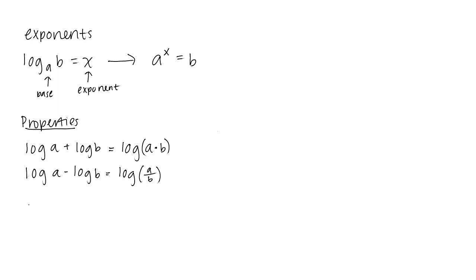Another important property of logarithms is what happens to exponents inside the logarithm. If I have log of a raised to the b power, that's the same thing as b times log of a. We just move the exponent out and multiply it by the entire logarithm, log a.